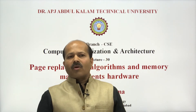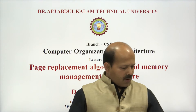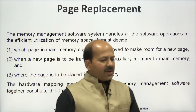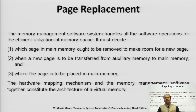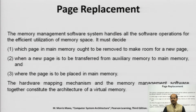Whenever a page fault occurs, the operating system is called and the page replacement algorithm replaces the referenced page with some page from main memory. The memory management software system handles all software operations for efficient utilization of memory space. It must decide which page in main memory is to be removed to make room for a new page, and where the new page from auxiliary memory is to be placed in main memory.